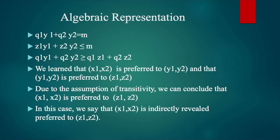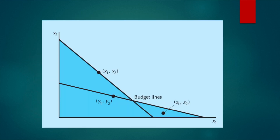We learned that x1, x2 is preferred to y1, y2 and that y1, y2 is preferred to z1, z2. So, due to the assumption of transitivity, we can conclude that x1, x2 is preferred to z1, z2. In this case, we say that x1, x2 is indirectly revealed preferred to z1, z2. We can conclude from the figure that x1, x2 is revealed preferred to all of the bundles in the blue shaded area — because x1, x2 is directly revealed preferred to y1, y2 and indirectly revealed preferred to z1, z2.